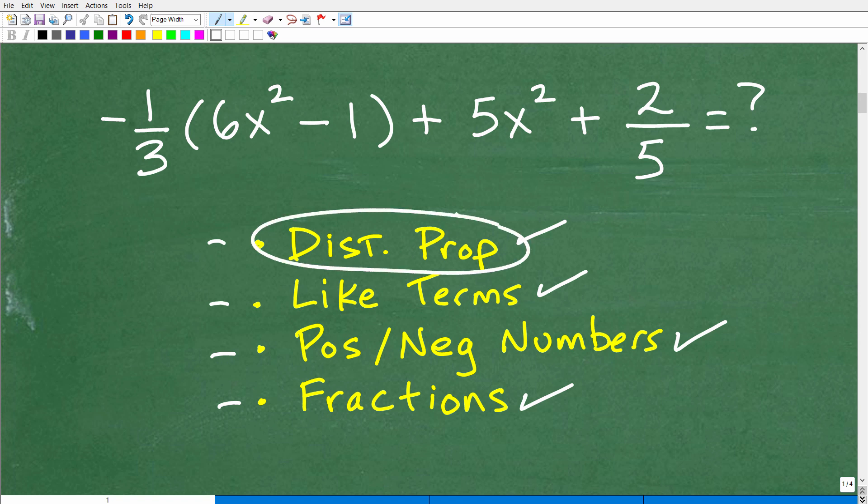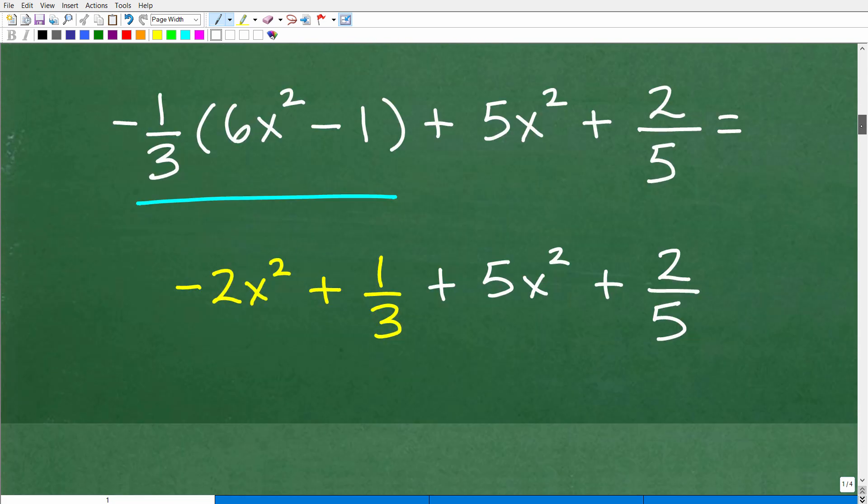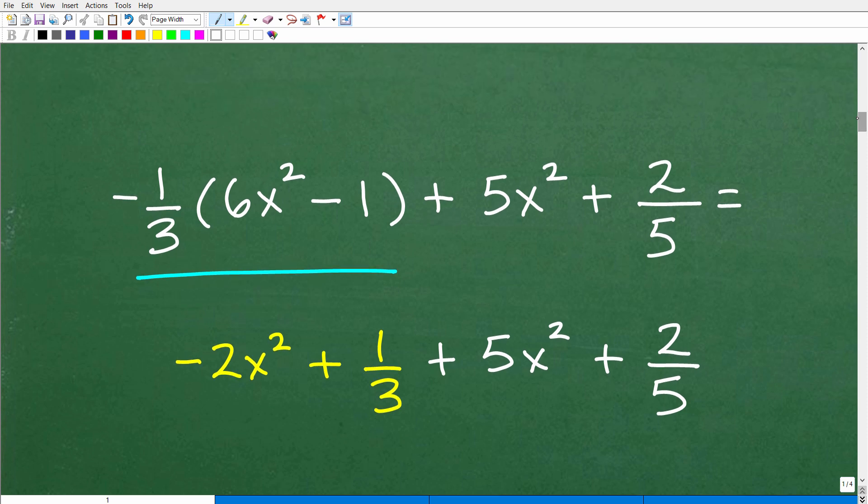Well, anytime you have parentheses like this, you have a sum or a difference, a number outside of some sort of set of parentheses, that's an indication that you want to use the distributive property to start there. So let's go ahead and take a look at that right now. Well, so the distributive property is when we have a number outside of a sum or difference, we have to take this number and we have to multiply that number outside the sum or difference to all these inner terms right here.